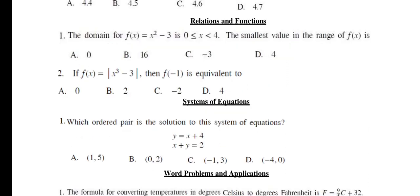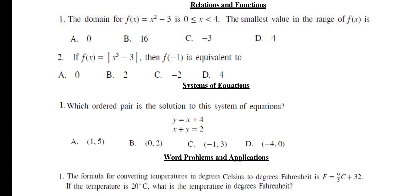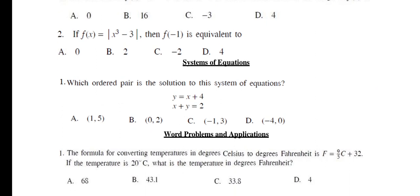Questions from relations and functions. The domain for F of X is equal to X square minus 3 is 0 less than or equal to X less than 4. The smallest value in the range of F of X is, and the right option is C minus 3. Number 2 for system of equations. Number 1: Which ordered pair is the solution to the systems of equations? The right option is C minus 1, 3.